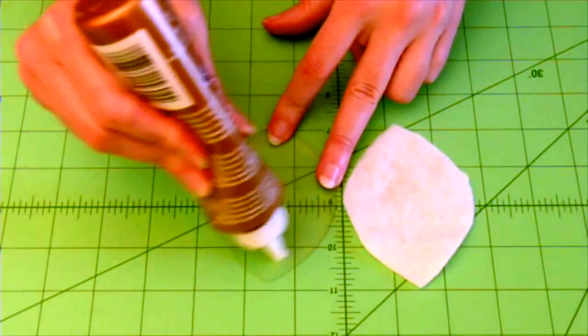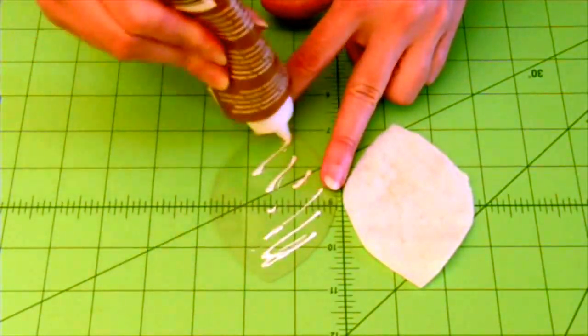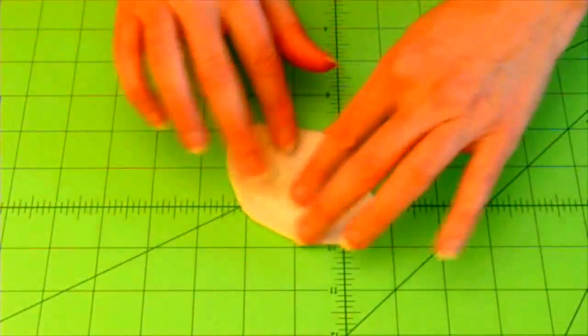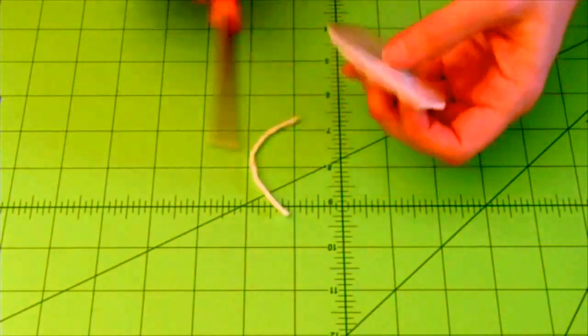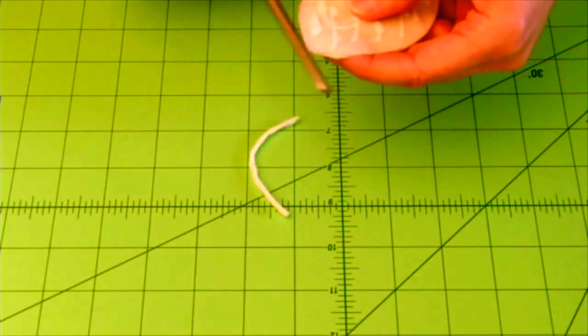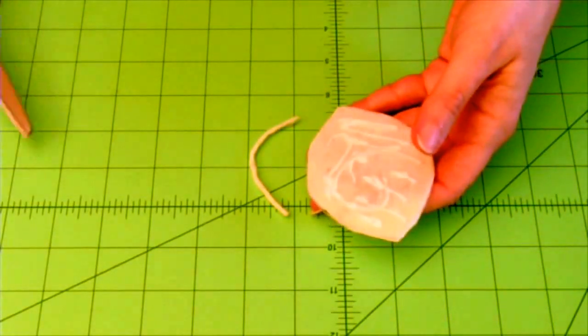Next, we're going to glue this batting to this template. If you can, let that set for just a few minutes. Once you've given it time to set, then carefully trim away any batting that shows sticking out along the edges.